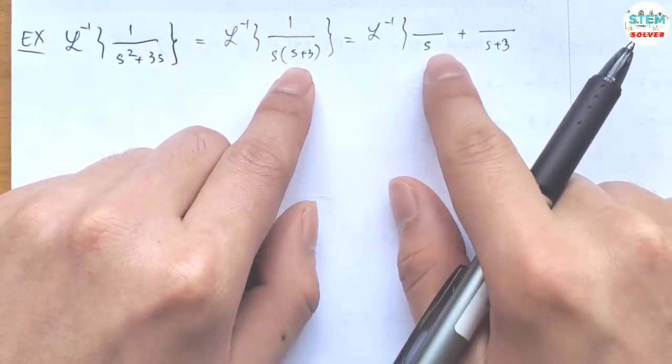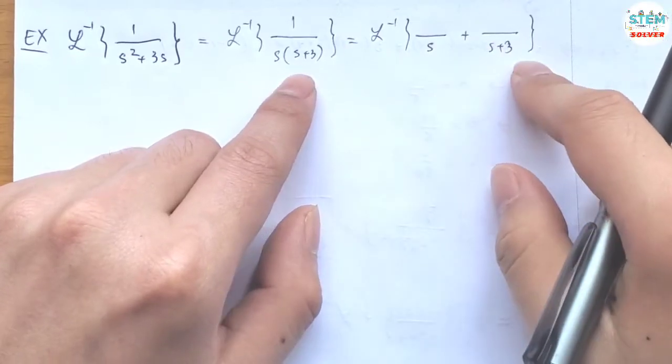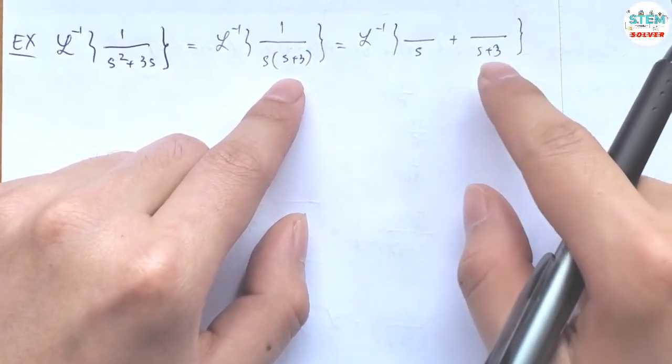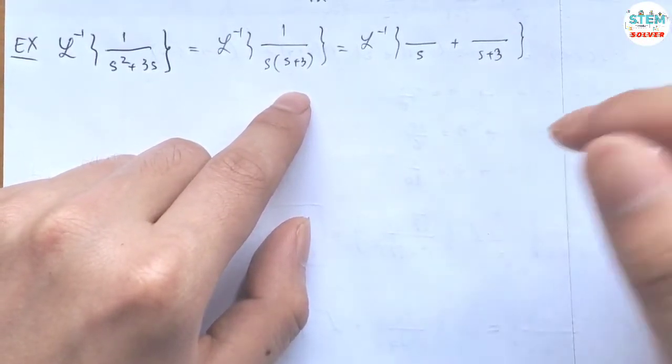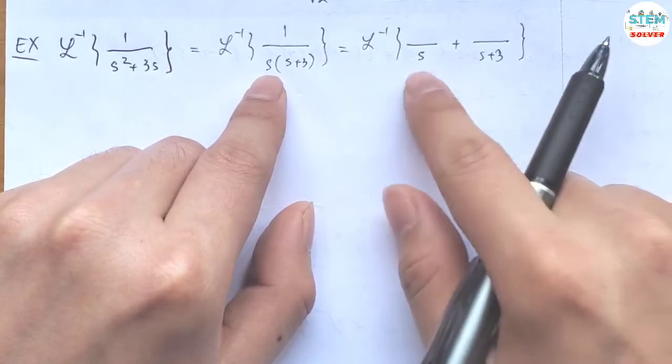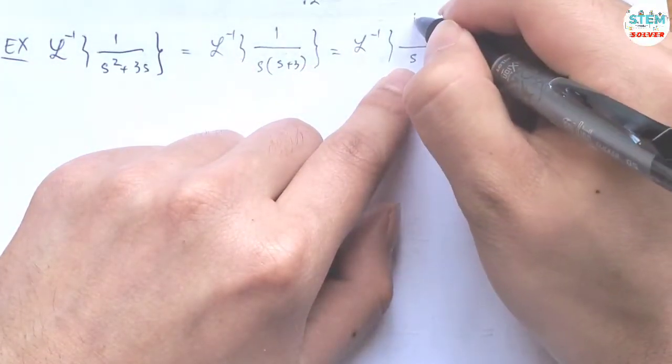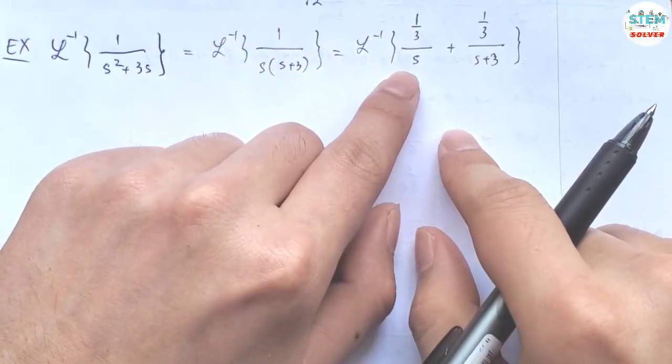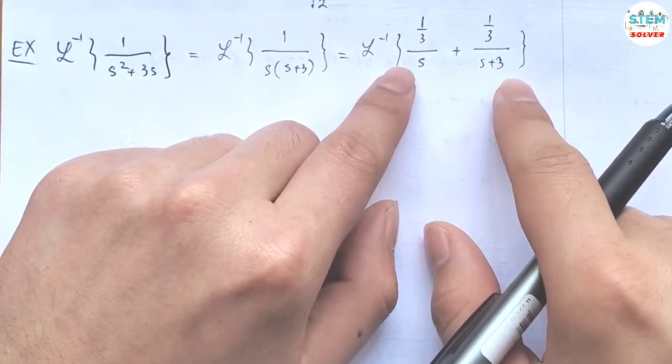So this can be obtained from something over s plus something over s plus 3, right? And by the way, if you haven't had the chance or have forgotten about this method, I'll put a link on the upper right corner for you so that you can go there and check it out. So these, they are off by 3, so I'm going to have 1/3 on the numerator.